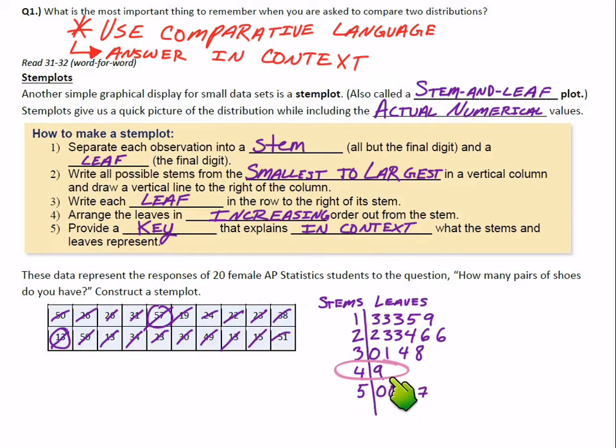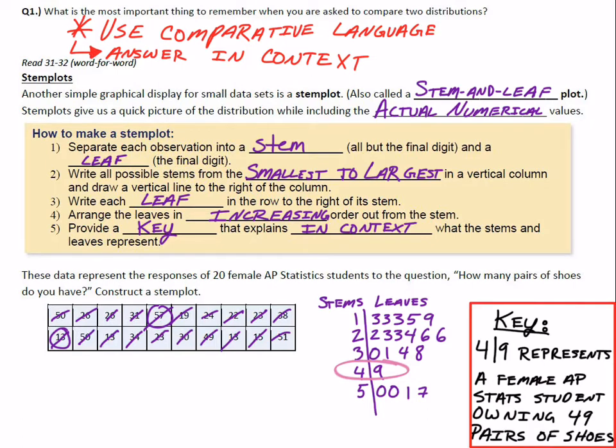My favorite one is the 4 and the 9 here. The 4 is my stem, and the 9 is my leaf. For my key, the 4 with a 9—what does that represent? That represents a female AP stat student owning 49 pairs of shoes. That's probably the most common mistake: forgetting to put a key on there to give us some reference what the numbers mean. You just have to pick one and give it as an example in your key, and provide context with what that number is going to represent.